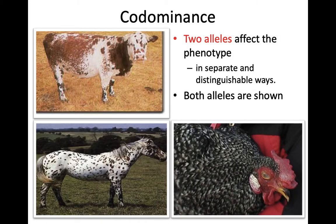Another type of non-Mendelian genetics is codominance, where two alleles actually affect the phenotype. Those two alleles are separate, and you can distinguish or see them both. Basically, you can see both alleles in the phenotype. This happens sometimes in cows, horses, and even chickens. A lot of times we call them roan, particularly in cows and horses, and it's where we get these kind of spotting patterns because we see two alleles expressed.